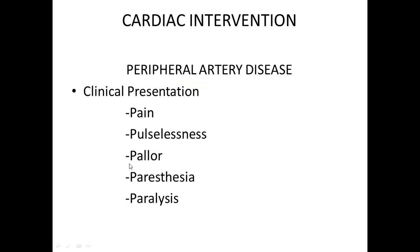Third is pallor — because the rich blood supply from the artery feeds the tissue, so if there's no blood supply, the area will be pale. Fourth is paresthesia — once nerves stop getting nutrients they signal distress with pain, numbness, tingling, and burning. Fifth is paralysis, because the nerves and muscles cannot function properly due to decreased blood supply. So the five Ps — pain, pulselessness, pallor, paresthesia, and paralysis — are an important presentation of peripheral artery disease.